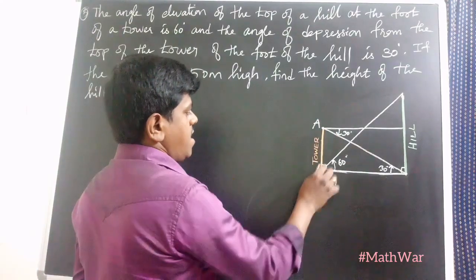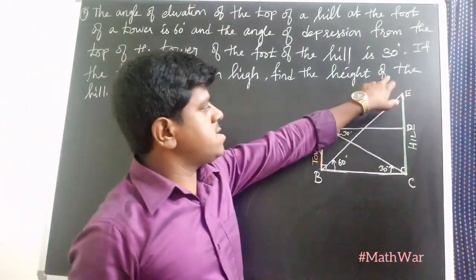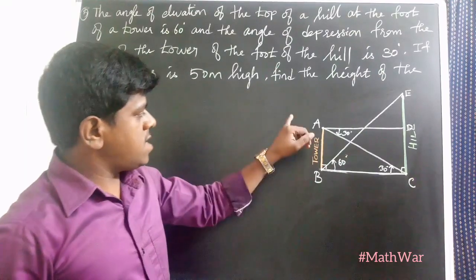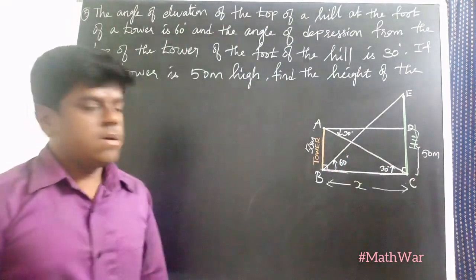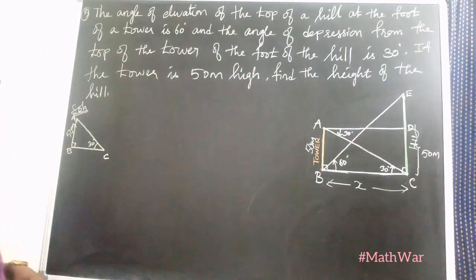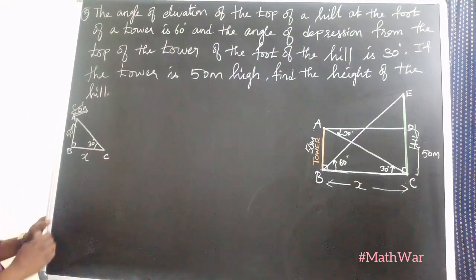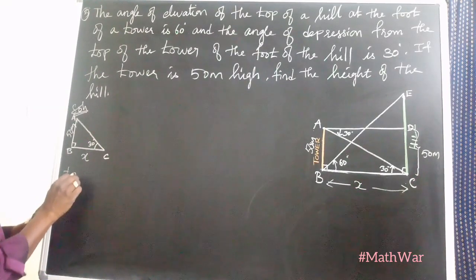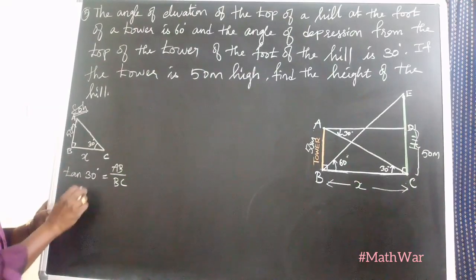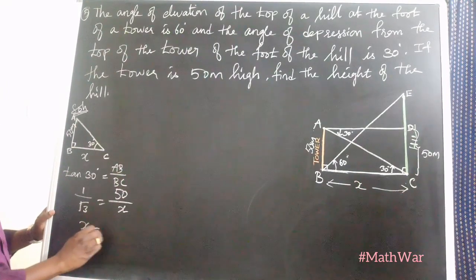We name the points A, B, C, D, E — AB is the tower, EC is the hill, AD is the horizontal line. Angle CBE = 60° and angle ACB = 30°. Let BC = X. In triangle ABC, angle ACB = 30°, AB = 50 meters, BC = X. Using tan 30°: tan 30° = AB / BC, so 1/√3 = 50 / X, therefore X = 50√3 meters.